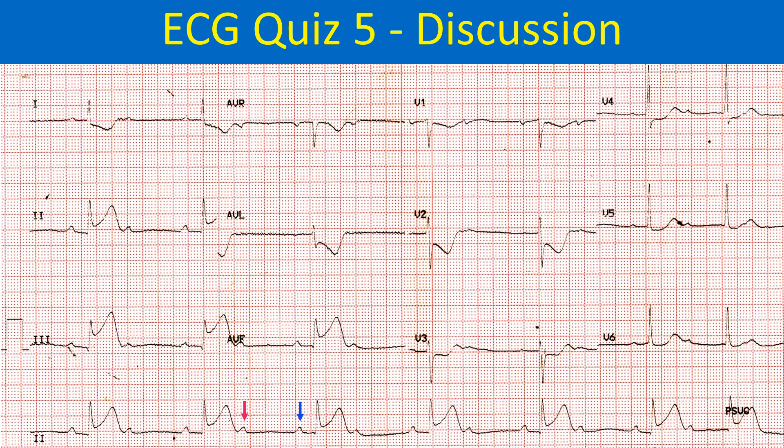It is possible that longer recordings might show slight changes in the P-QRS relationship, so that it could even be a complete AV block appearing as 2:1 AV block for a short period of time during the ECG recording.